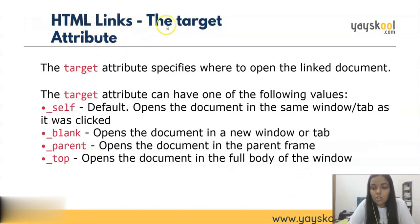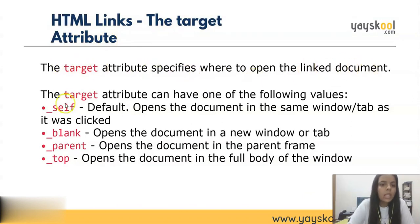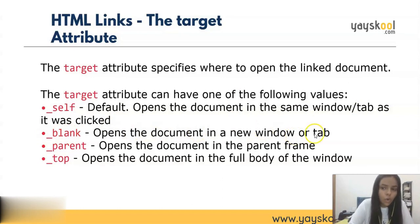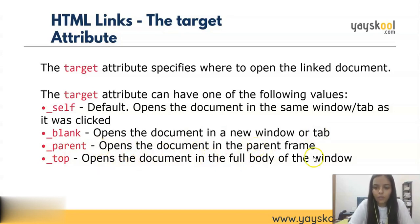There is also a target attribute in HTML links, which specifies where to open the linked document. The target attribute can have the following values: _self (default) opens the document in the same window or tab; _blank opens the document in a new window or tab; _parent opens in the parent frame; and _top opens the document in the full body of the window.